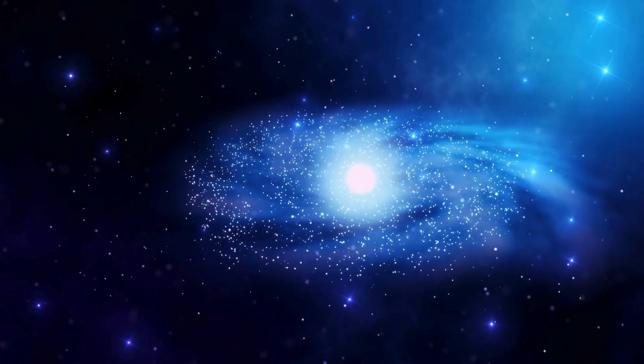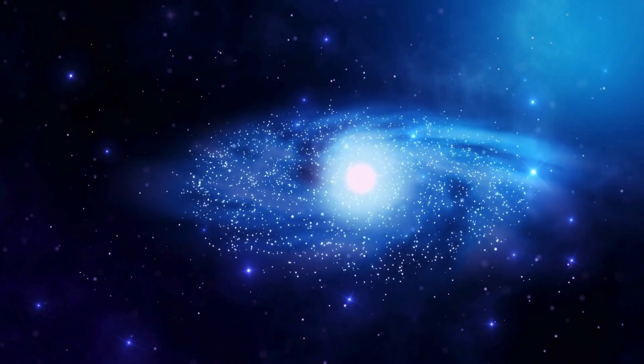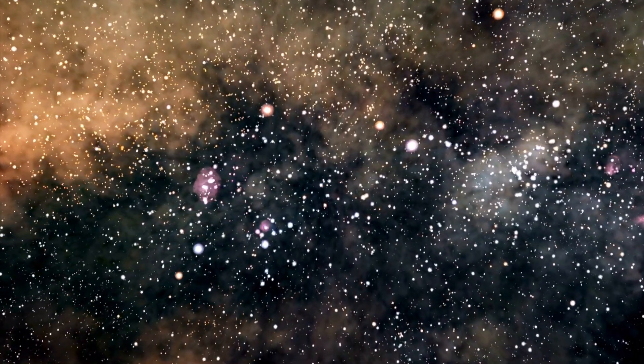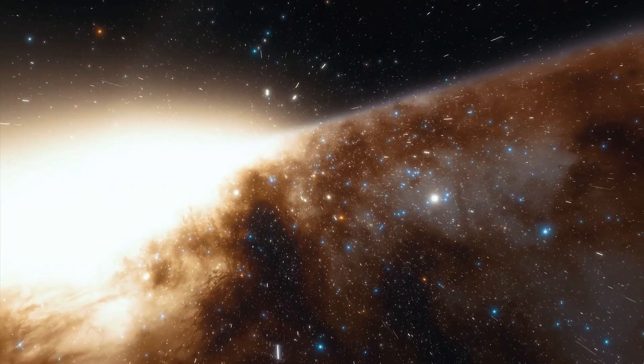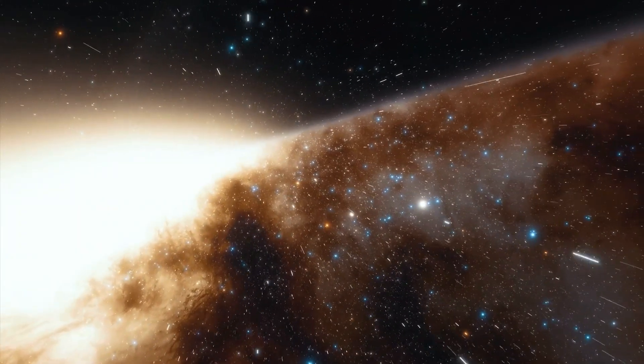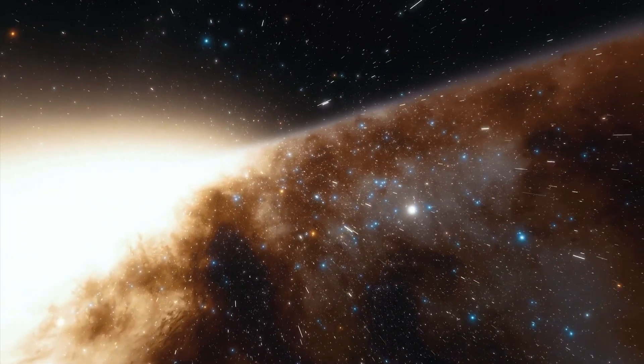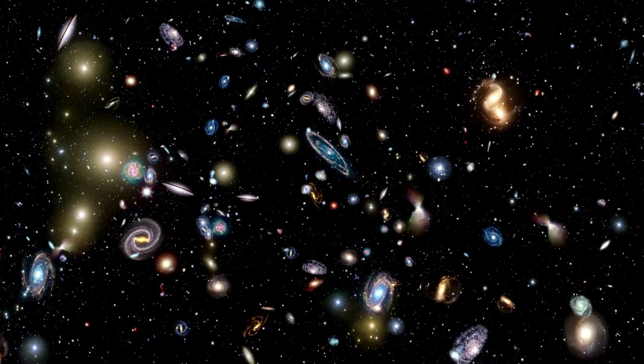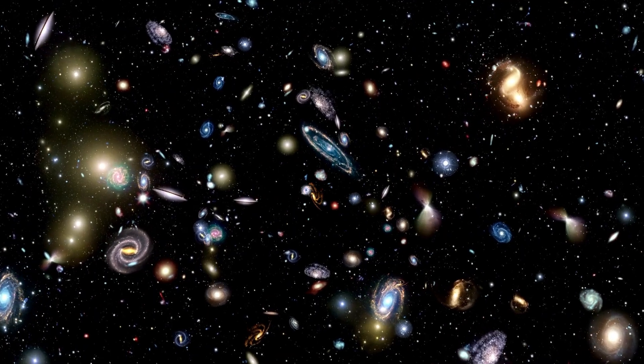Then there's the Big Freeze, a slow and relentless expansion that freezes the cosmos into an eternal ice age. Lastly, the Big Rip, an exponential expansion tearing through the fabric of space, makes distant galaxies vanish faster than the speed of light, leaving us with a pitch-black night sky.